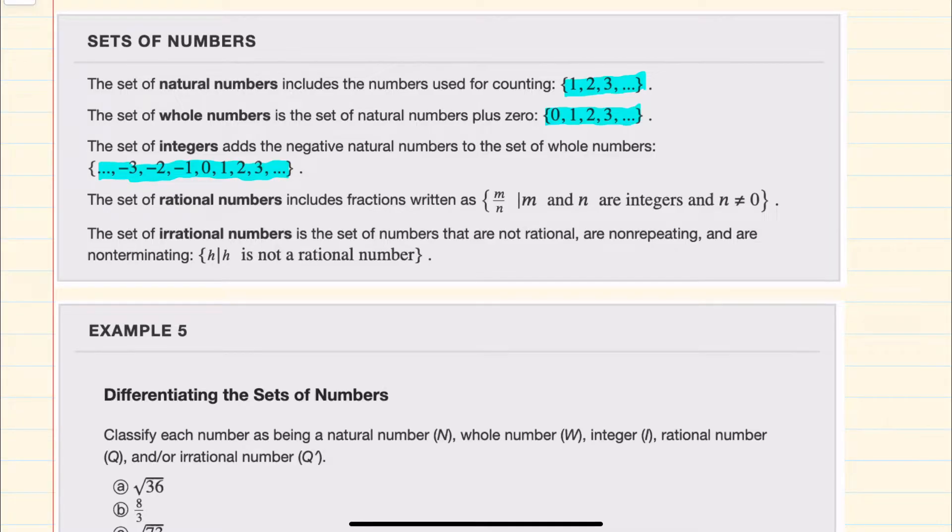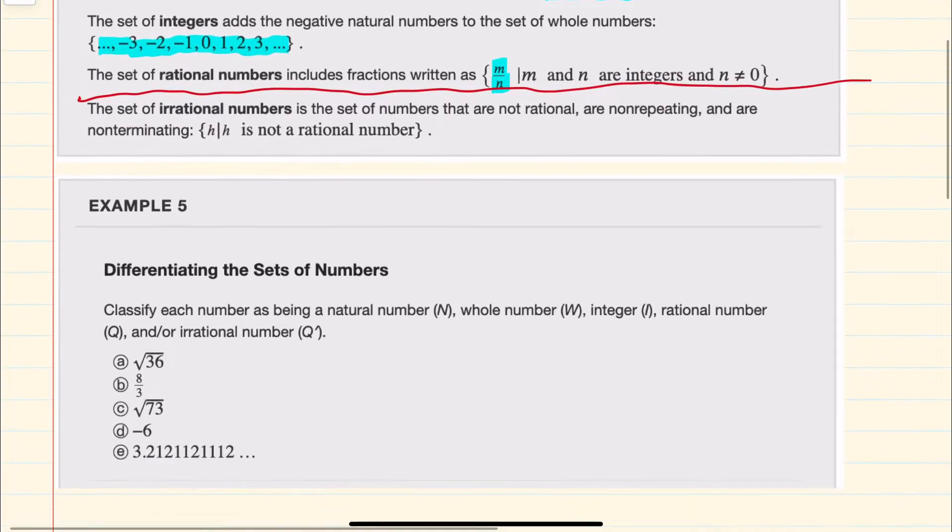Rational numbers can be written as fractions where there is an integer in the numerator and the denominator. And since natural numbers, whole numbers, and integers are all rational, I'm going to draw a line here because irrational numbers are going to be none of the above. With that in mind, we can move on.